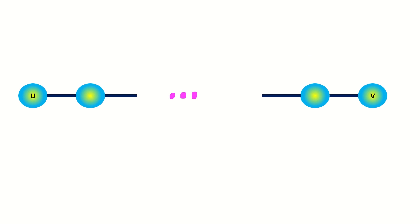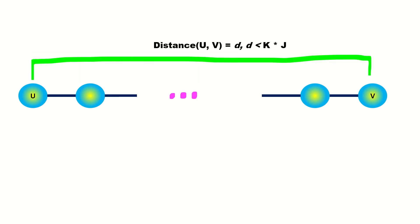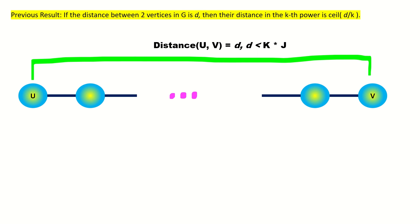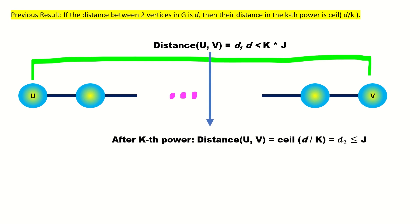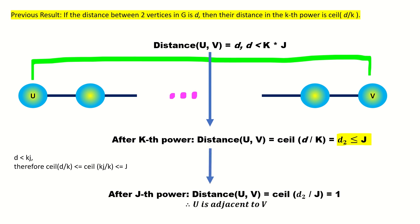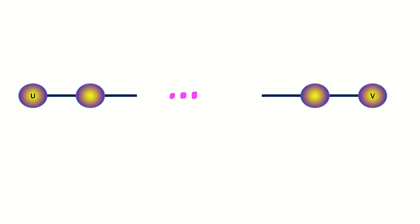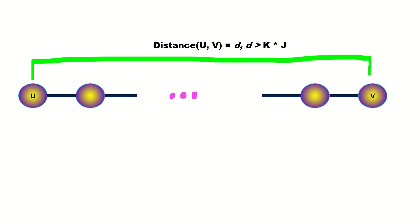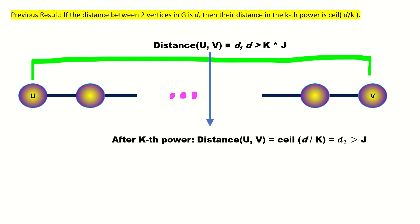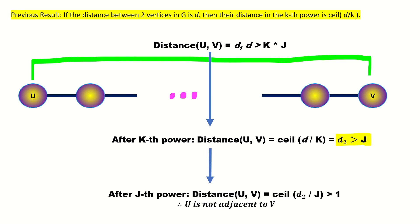Now what if u and v were some number d less than k times j apart in the original graph? Then again by our previous result and taking the kth power, the distance between u and v is shortened to the ceiling of d over k, which we can refer to as some number d sub 2. d sub 2 is less than or equal to j, because since d is less than kj, then the ceiling of d over k is less than or equal to the ceiling of kj over k, meaning that d sub 2 is at most j. That means that when we then take the jth power of this graph, the two vertices u and v will be adjacent as well. Finally, if u and v were some distance d farther than k times j apart in the original graph, then the distance between u and v in the kth power must be strictly greater than j. If we then take the jth power of that graph, linking all pairs of vertices at most j apart, we find that u and v remain non-adjacent.